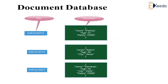Document databases are generally used for posts on social networks or blogs, because we are not always aware of how many attributes and values there will be. For example, a first and second document may have three attributes and three values, while a third document may have four attributes and four values. Each corresponding document has its own unique key.